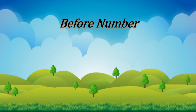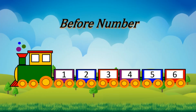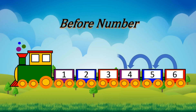Kids, do you see the train? Yes, it has numbers on it. Now let's do backward counting. What number comes before 6? Yes, it's number 5. Before 5, it's 4. Before 4, it's number 3. Before 3, it's number 2. Before 2, it's number 1.